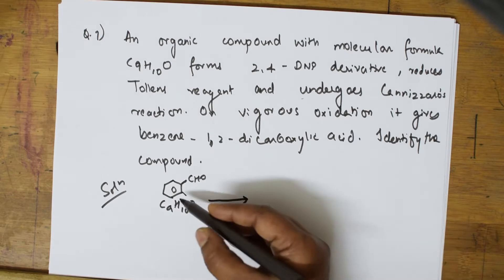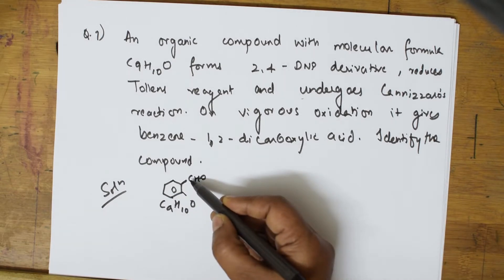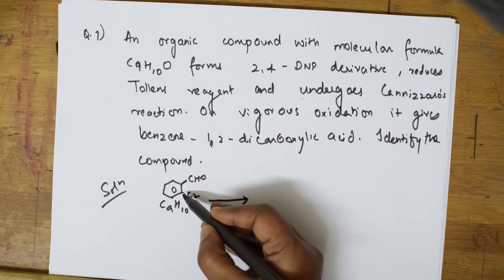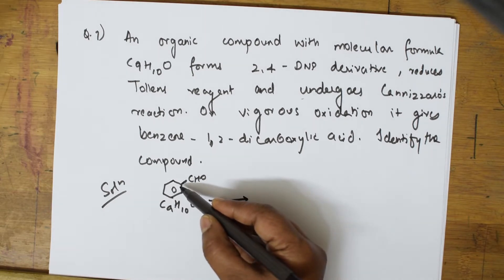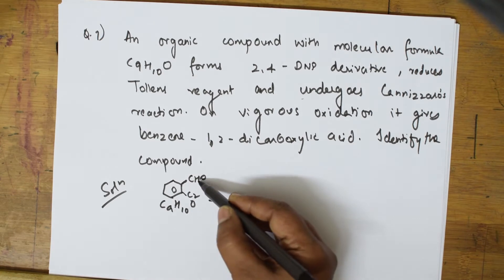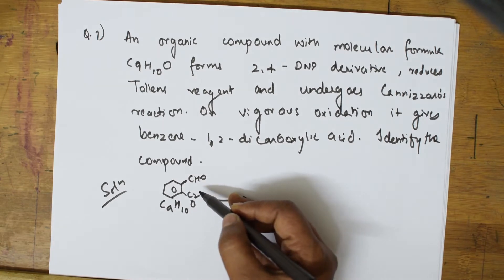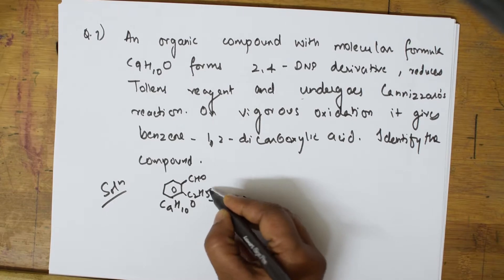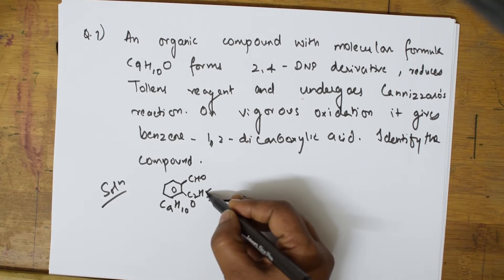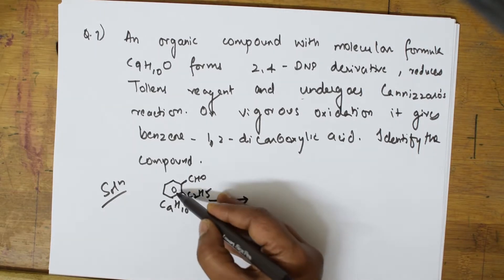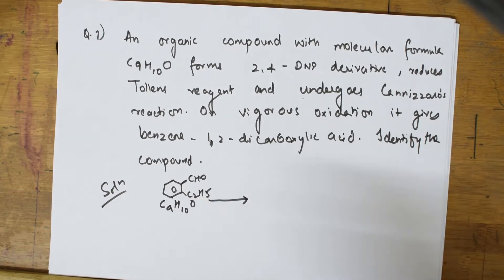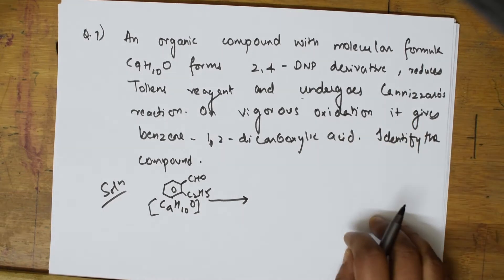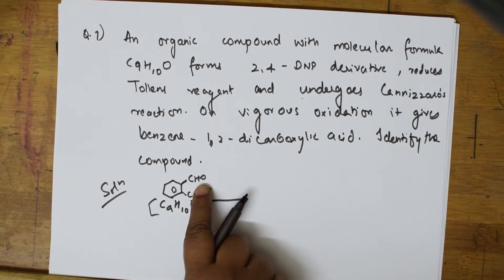Total carbons should be nine: C6H5 gives six, CHO gives one, so two more carbons are needed. Counting hydrogens: C6H5 gives five, and we need ten total, so the alkyl group must be C2H5. Therefore the compound is C6H5-CH(C2H5)-CHO — a C9H10O compound.